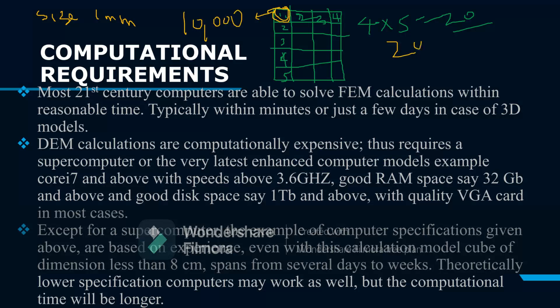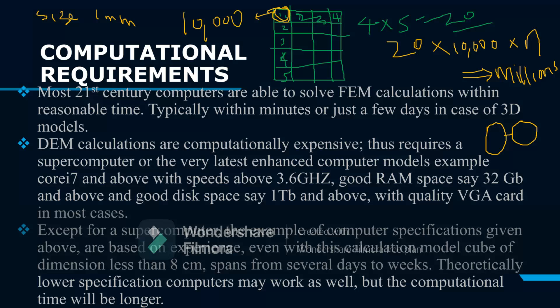So you'd have 20 times 10,000, times the dimension perpendicular to the slide — this could be in the millions. The principle of discrete element calculation is the calculation of interaction between particles, one particle to another, repeated until we reach the total number of discrete elements. With several millions, that interaction takes a very long time.